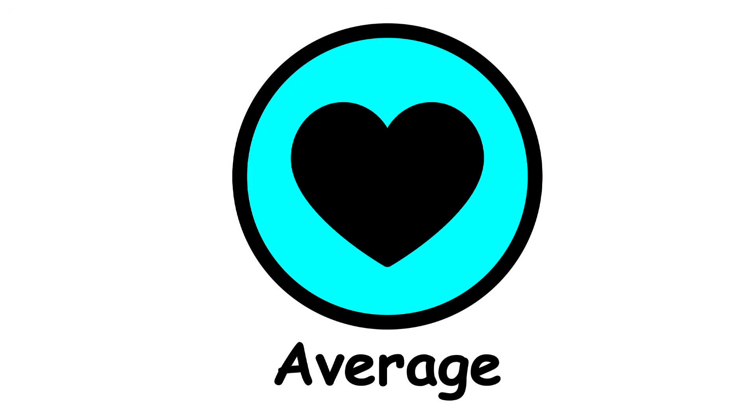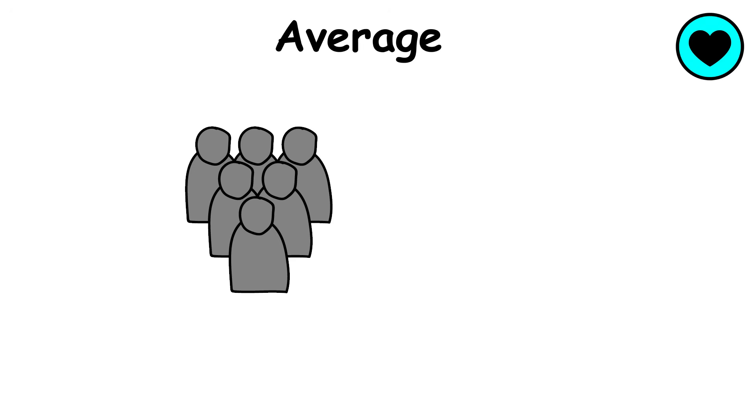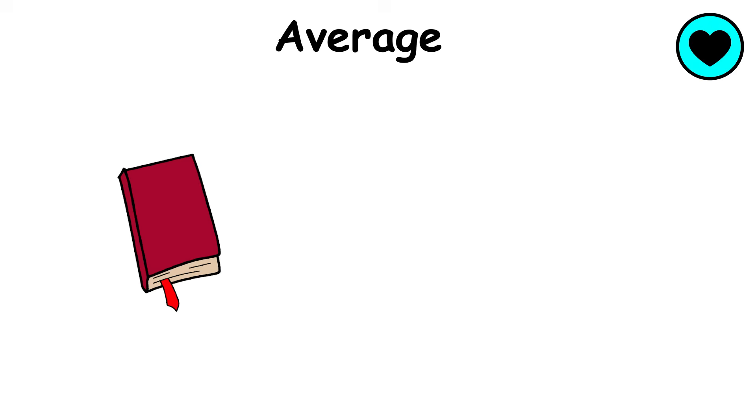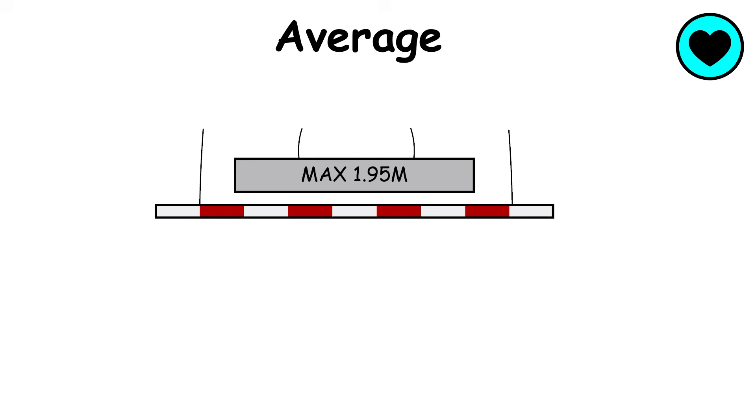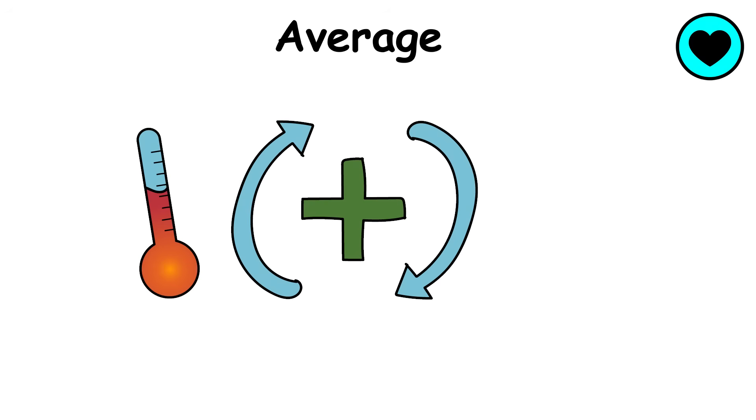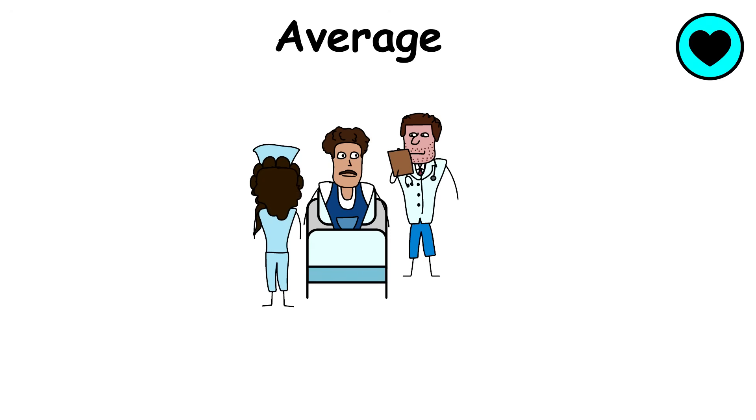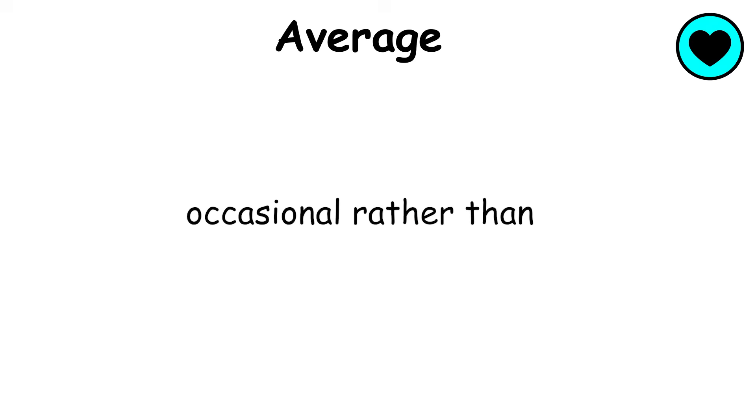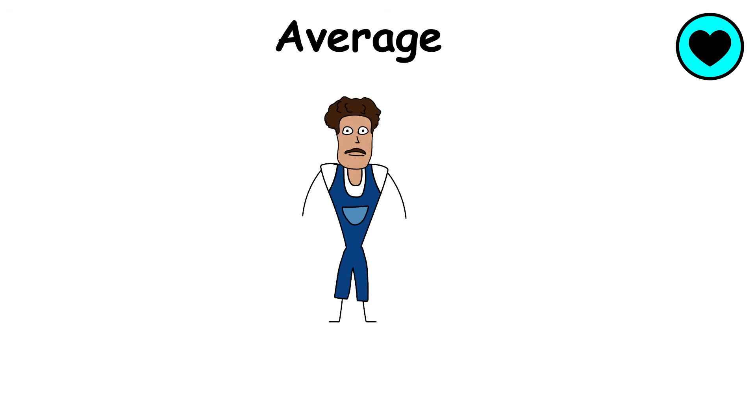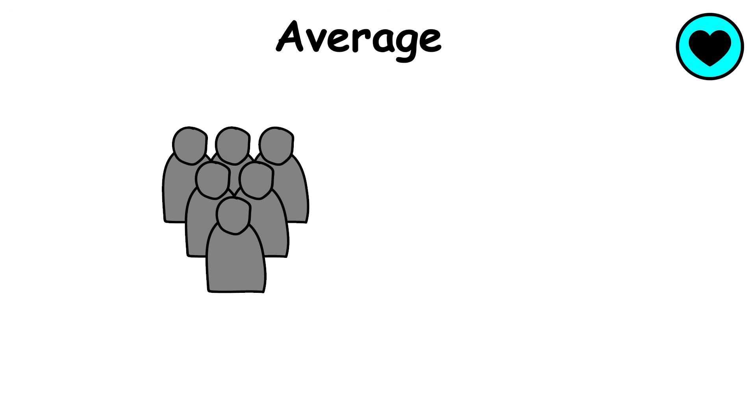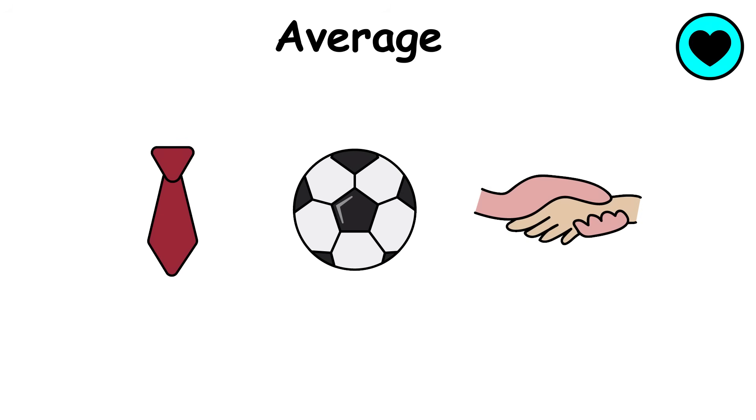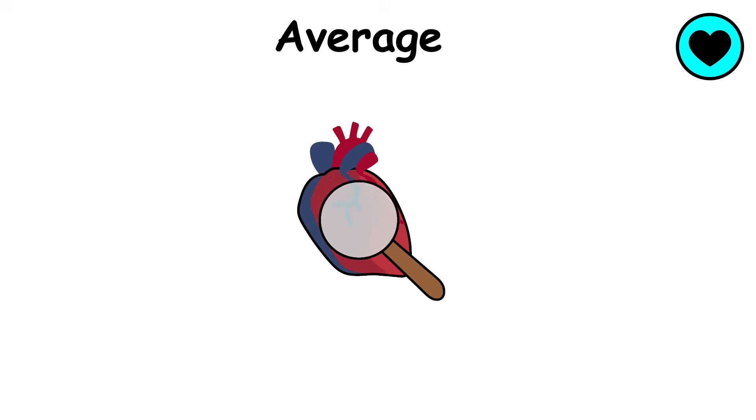Average health. Average health is the state of most people's bodies. At this level, it works reliably enough to handle school, work, and relationships without major limits. Energy is steady. Recovery from colds or small injuries is quick, and doctor visits are occasional rather than constant. Diet and exercise may not be perfect, but they are good enough to keep things running. Most people feel generally fine, though rarely at their best, managing life's demands without intentional focus on health.